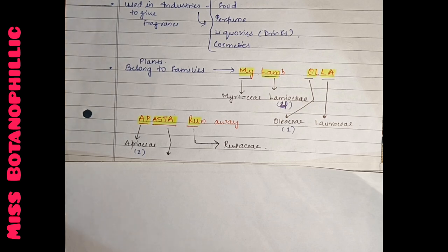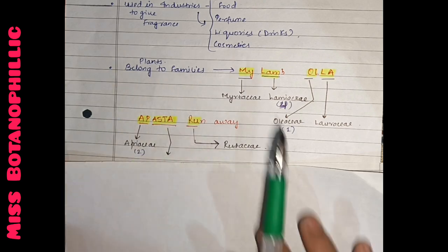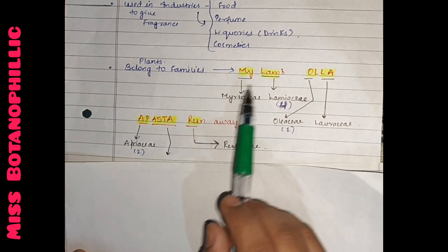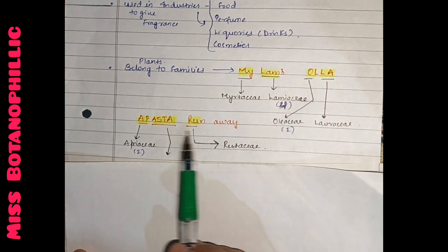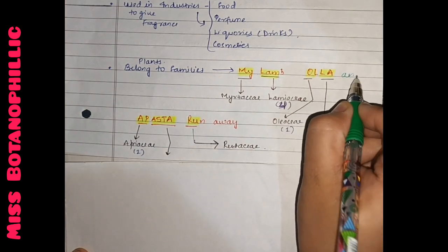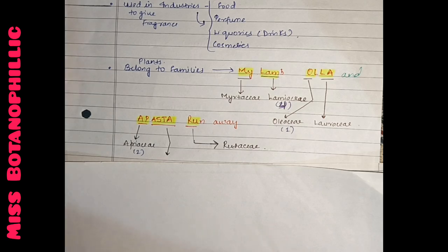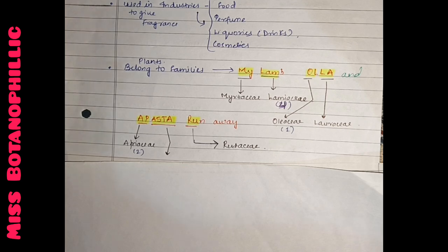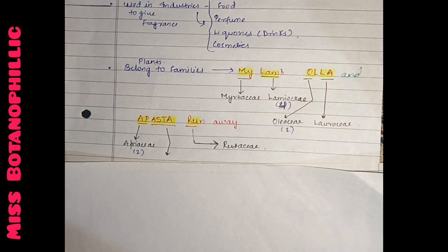Plants belonging to families, how do we remember the trick? My lamb Ola and Apesta run away. My lamb, Ola and Apesta run away. Now, what do you remember?